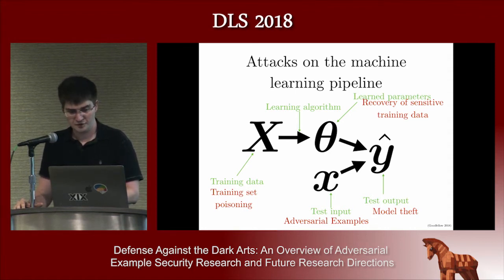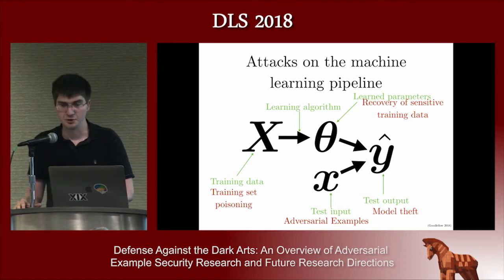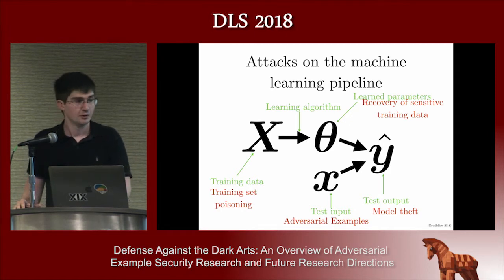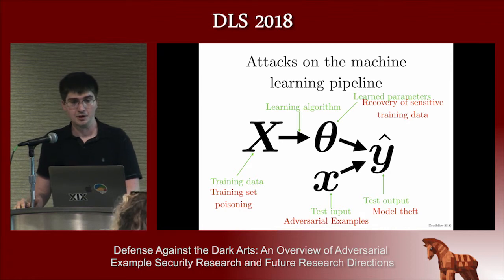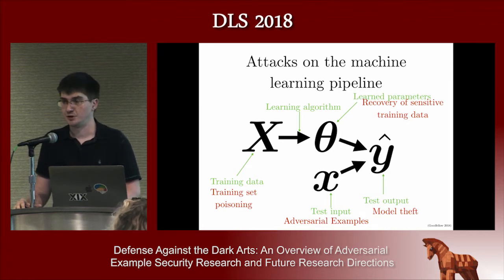Today, what we'll focus on is adversarial examples where the attacker supplies malicious inputs at test time. They don't get to alter the parameters of the model — they just get to present inputs that cause the model to make mistakes.